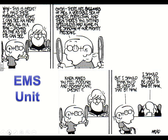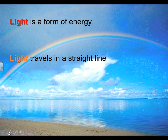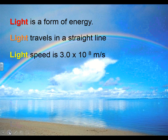So let's get started with the electromagnetic spectrum. Basic things we need to know about light: light is a form of energy, it travels in a straight line, and it has a speed of 3 times 10 to the 8th meters per second.